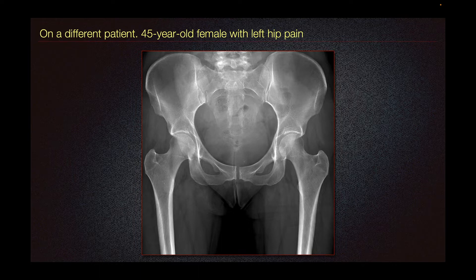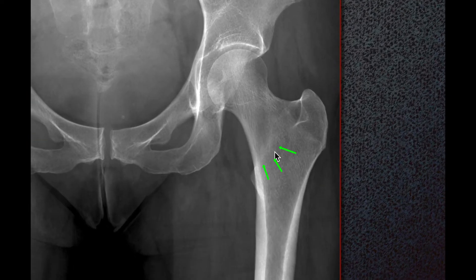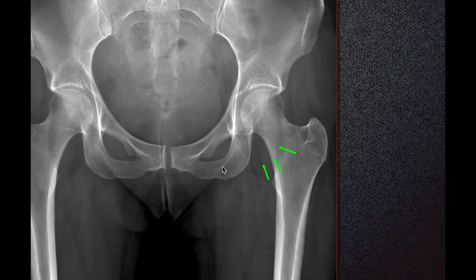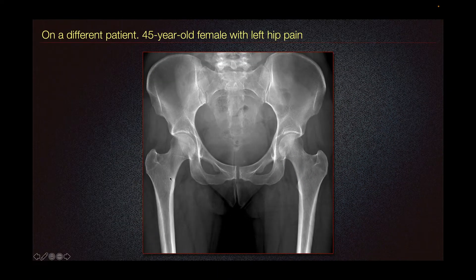As in this 45-year-old female with left hip pain, although radiograph is insensitive and can be normal in most cases, this patient shows a band of sclerosis in the left femoral neck compared to the normal side on the right, where you don't see a sclerotic band. This is concerning for stress fracture.